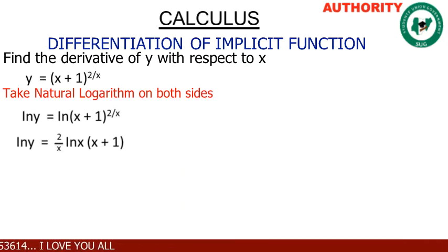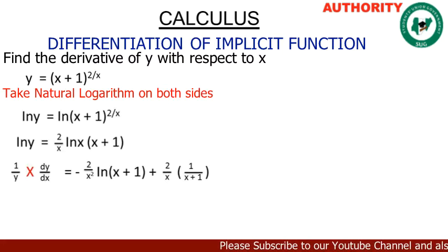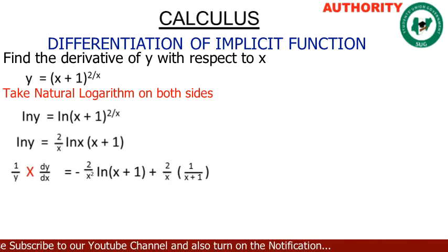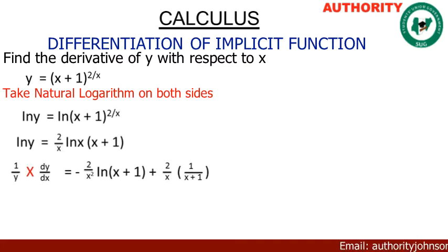Differentiating both sides with respect to x: the left side gives us (1/y) · dy/dx. On the right side we have (2/x) · ln(x+1), so we apply the product rule. The differentiation of (2/x) gives us −2/x², then times ln(x+1).